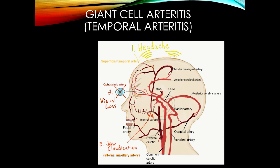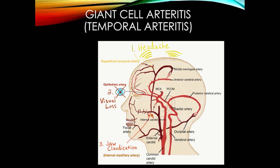Another secondary headache is giant cell arteritis — the older term is temporal arteritis. This is mainly inflammation of the extracranial vascular supply. The superficial temporal arteries are affected, so patients have pain in that area typically. About two-thirds of patients will have jaw claudication — that's extracranial vascular supply involvement and is the most specific feature. The intracranial vasculature can be affected as well, especially involving the ophthalmic artery.